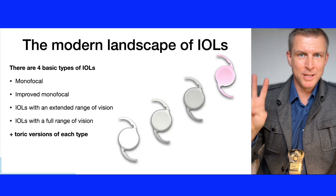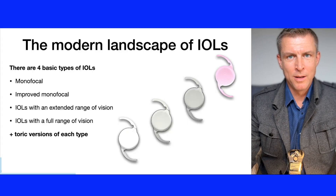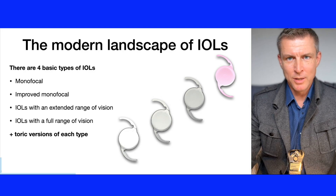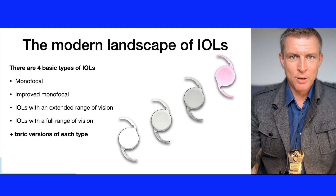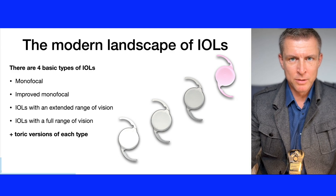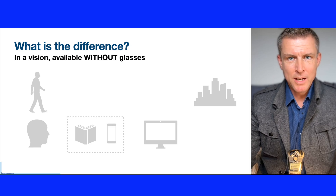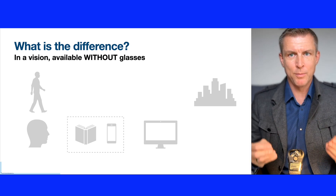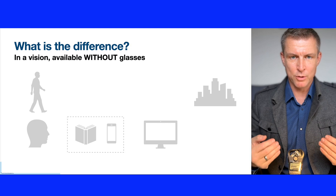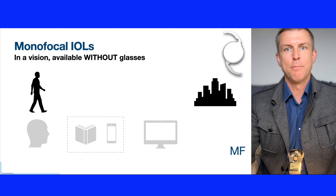In the modern world we have four basic IOL types: monofocal, enhanced monofocal, extended range of vision, and full range of vision lenses. No other IOL types exist — the rest is simply marketing. The basic difference is very simple: it is the amount of vision available to the patient at certain distances without use of glasses. Let's start with the simple monofocal IOL.